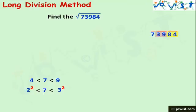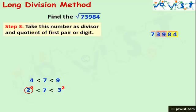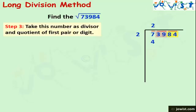We take this number as both the divisor and quotient for the first period. Starting the division process, we take 2 as divisor and quotient because its square is less than 7. We write the product of divisor and quotient, which is 4, below the dividend 7.